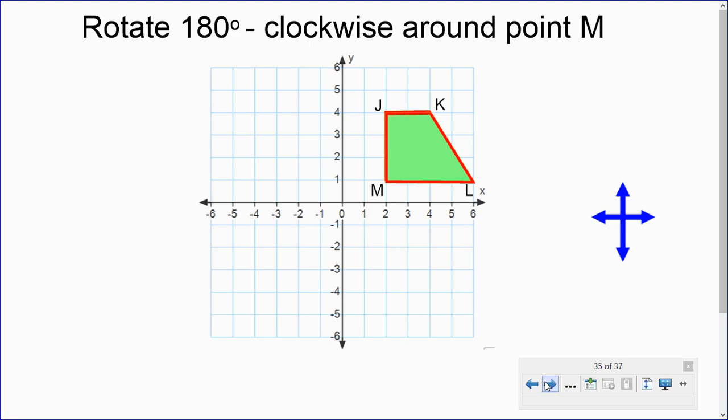Here's one for you. Rotate 180 degrees clockwise around point M. So point M is down here. And we're going to rotate it 180 degrees. Remember, turning it to the right. So notice the distance from point M to point J.